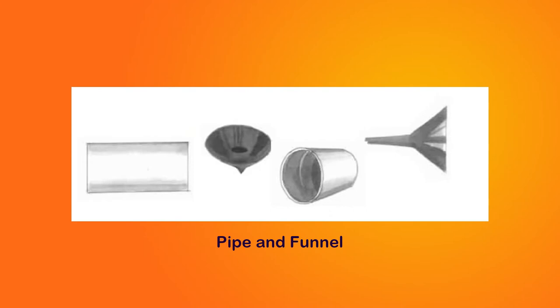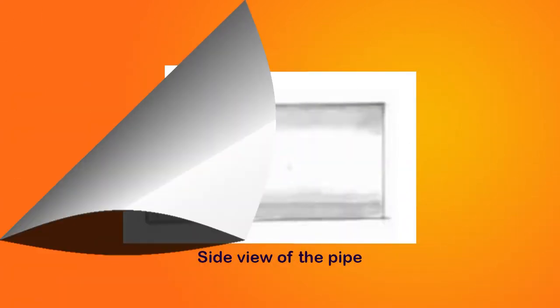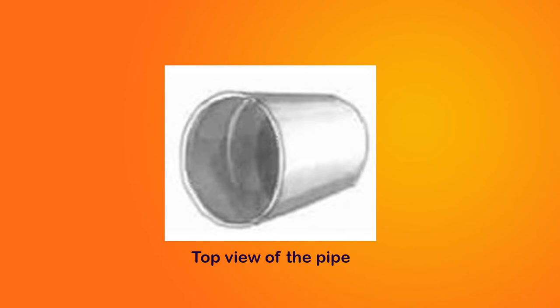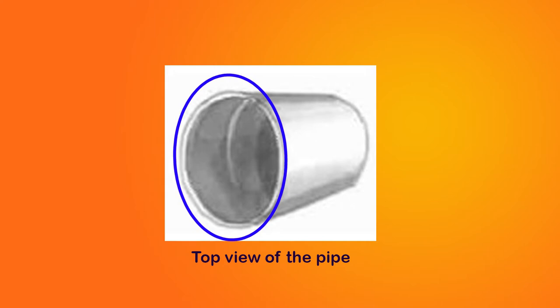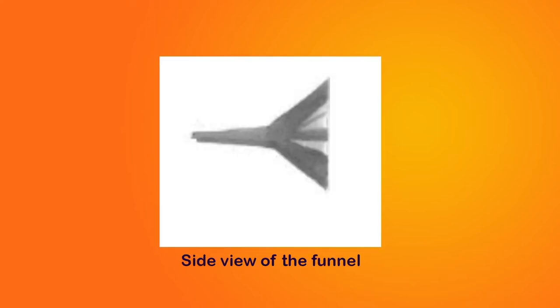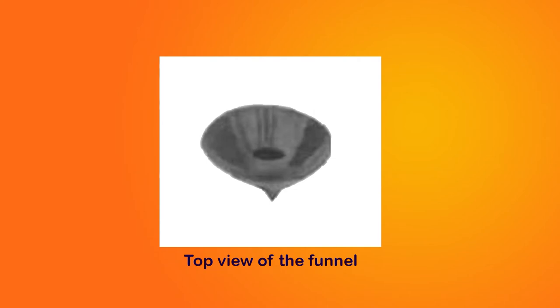Children, let's try to draw lines and match the side view and top view of a pipe and a funnel. Observe these figures — we can find the hole by which we can identify the top view. This is the side view of the pipe, and here we observe the top view of the pipe where we can see a hole in it. This is the side view of the funnel, and this is the top view where we can see a hole in it.